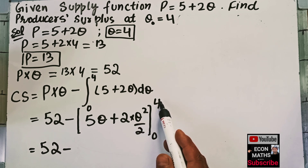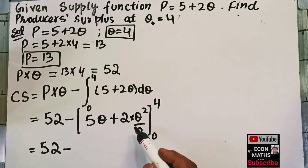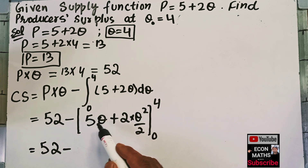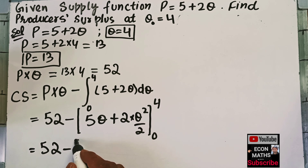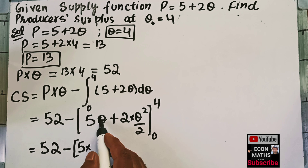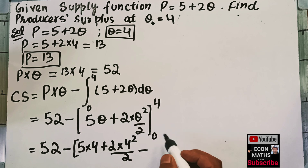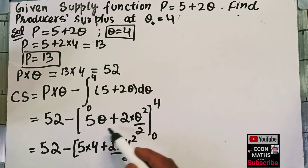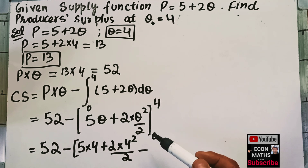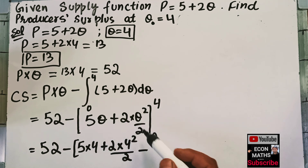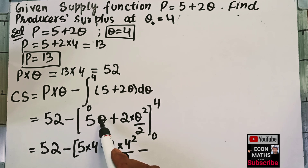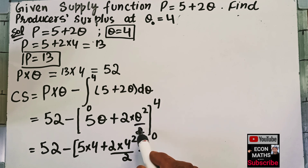We evaluate at the upper limit Q = 4: 5 × 4 + 4²/2 = 20 + 16/2 = 20 + 8 = 28. Then we subtract the expression evaluated at the lower limit Q = 0: 5 × 0 + 0²/2 = 0. So the integral evaluates to 28 − 0 = 28.